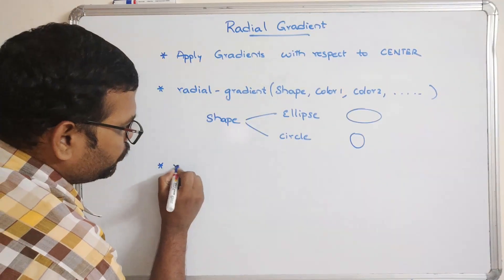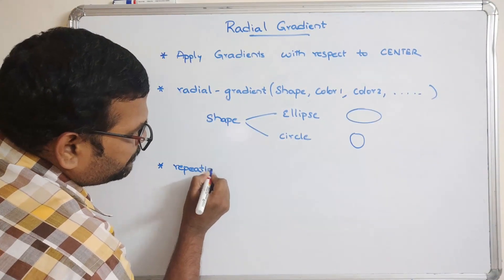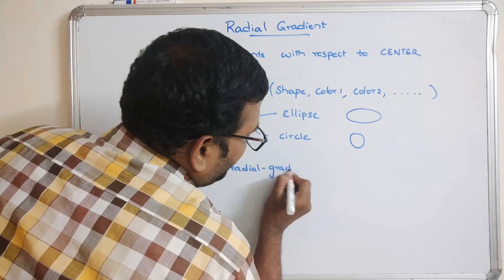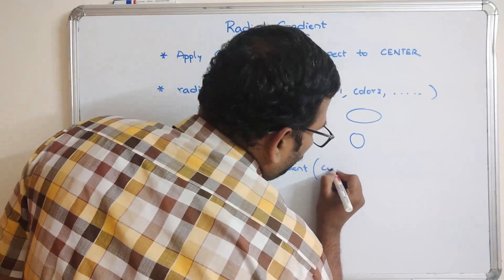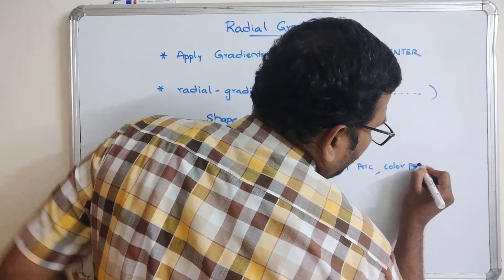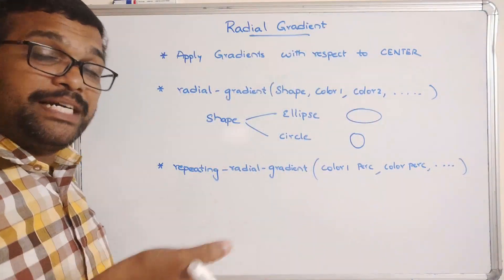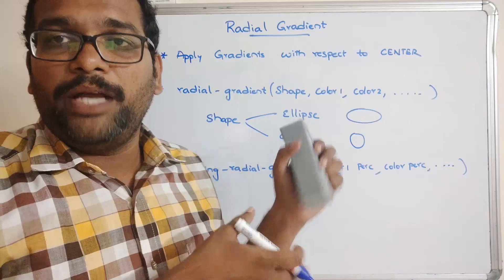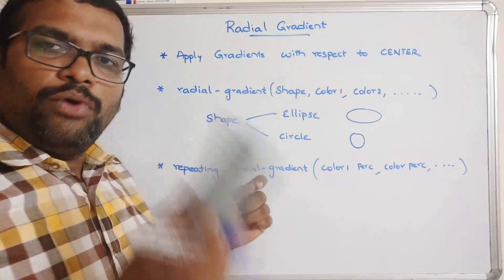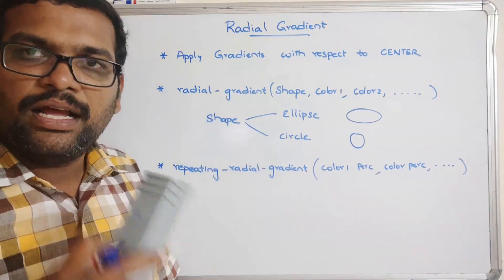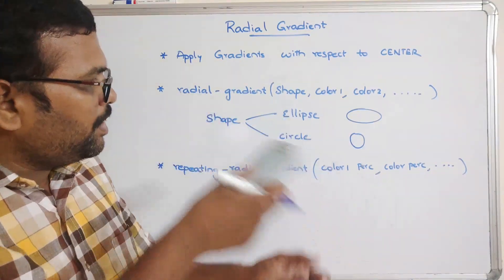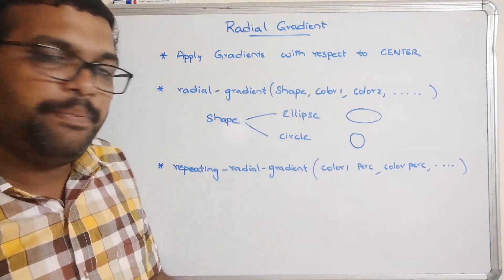The second function is Repeating Radial Gradient. For this function, we need to give Color 1 with a percentage, Color 2 with a percentage, etc. We need to specify how much percentage the color should be applied for the gradient. Now we will move to the system and I will demonstrate how these gradients are applied using the Radial Gradient and Repeating Radial Gradient functions.